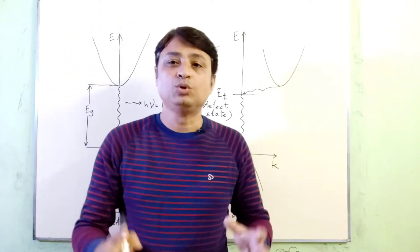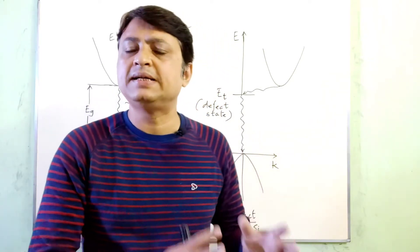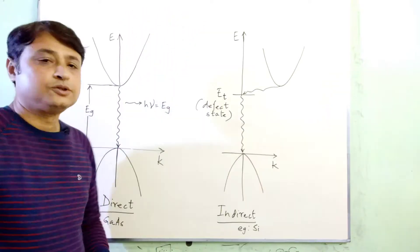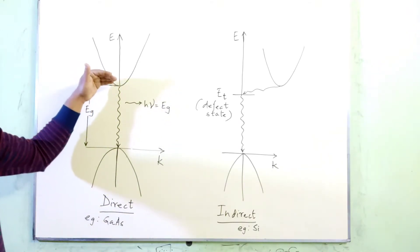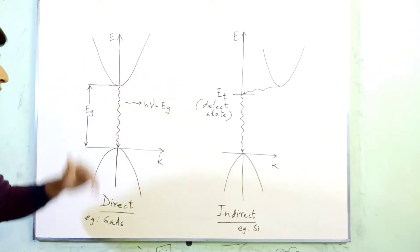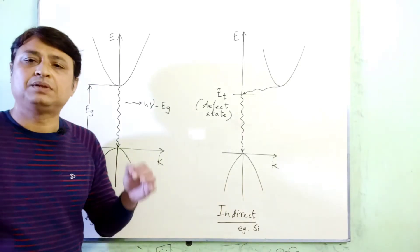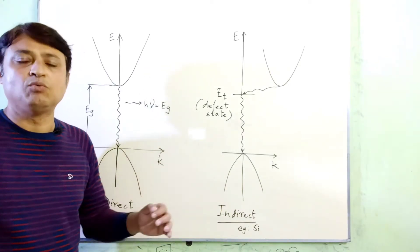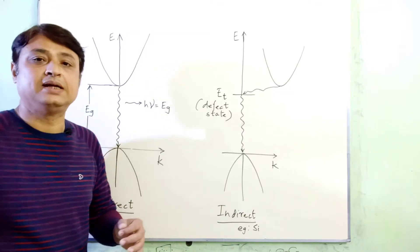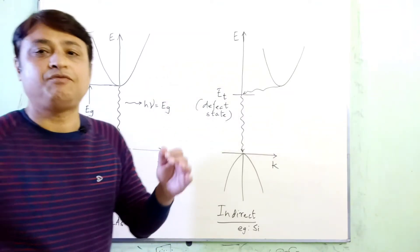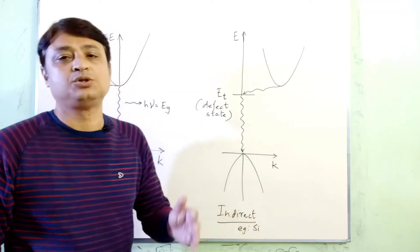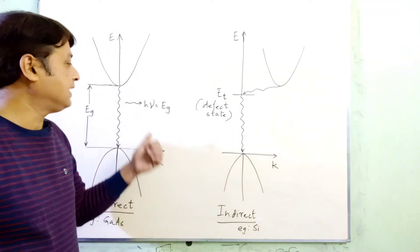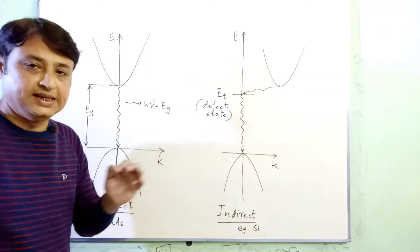There are two types of semiconductors: direct and indirect bandgap semiconductors. In a direct bandgap semiconductor, when an electron jumps from the conduction band to the valence band, it gives up energy equal to the bandgap energy, and we get a photon with energy equal to the bandgap energy. This is the relation H nu equals EG.